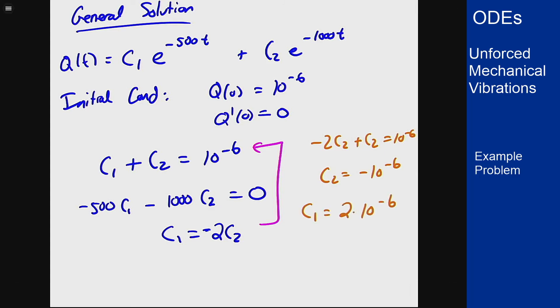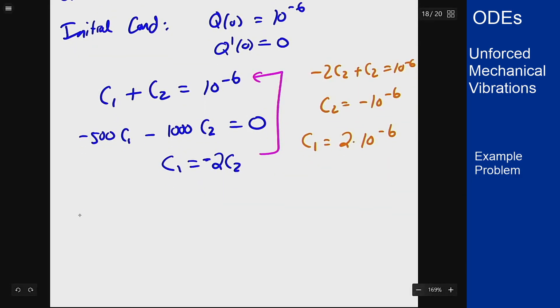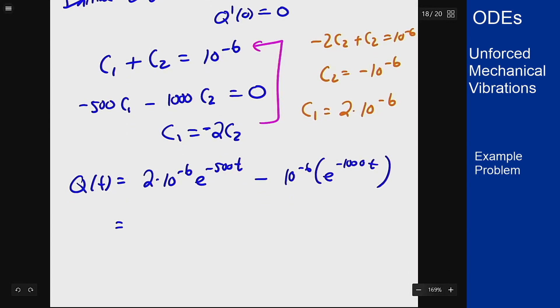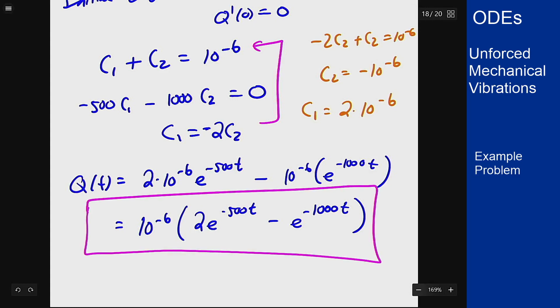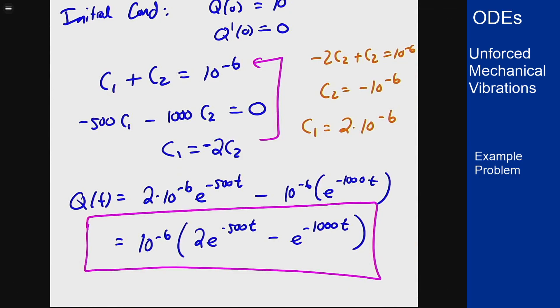And so my solution that I get here is q of t is 2 times 10 to the minus 6th e to the minus 500 t minus 10 to the minus 6th e to the negative 1,000 t or if you want to simplify it you could pull out the 10 to the minus 6th to the front, 2 e to the minus 500 t minus e to the minus 1,000 t. And that is a function for the charge on the capacitor at any given moment t which is what the problem asked us to solve.